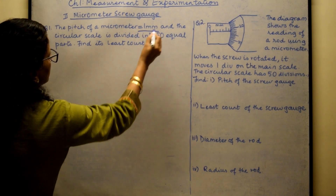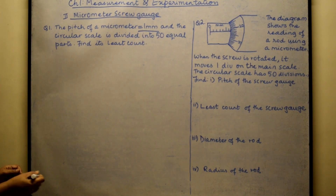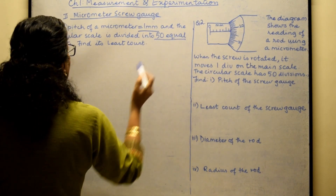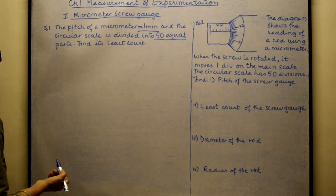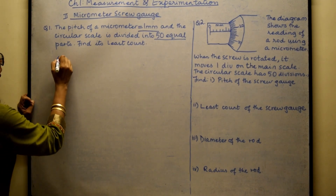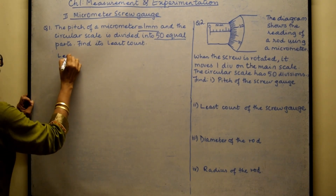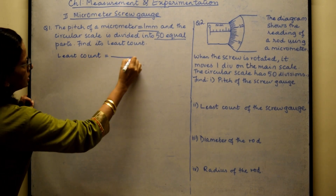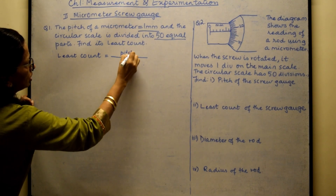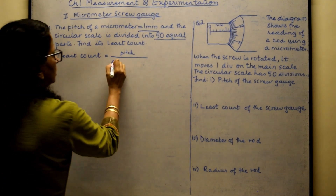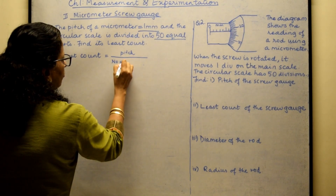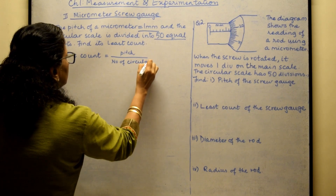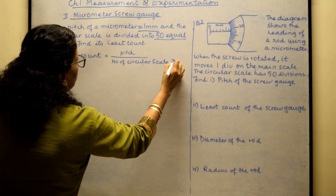The pitch is given as one millimeter. The circular scale has 50 equal parts. They ask us to find the least count, so we need to know the formula: the least count of the micrometer is given by pitch divided by the number of circular scale divisions.